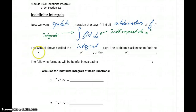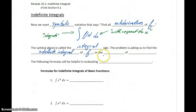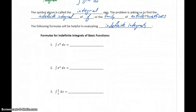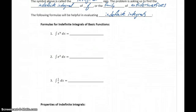This problem is asking us to find the indefinite integral of some function f, or another way to say that exact same thing is to find that family of antiderivatives. The following formulas are all going to be helpful in evaluating these indefinite integrals. Each of these formulas comes back to the idea of essentially working a derivative backwards — what function would we have to start with so that if we took its derivative we would get x to the nth power?